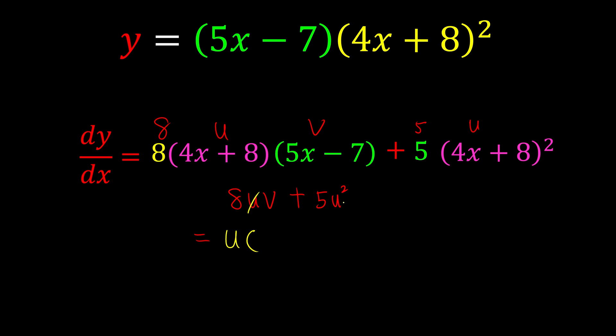After we take out u, we're going to cut it off from the original equation. This one left with u, so this is why we have 8v + 5u. So now we have u(8v + 5u).